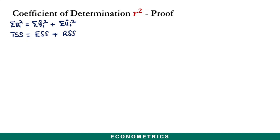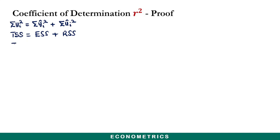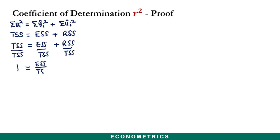The equation TSS = ESS + RSS shows that the total variation in the observed Y values about their mean can be partitioned into two parts: one attributed to the regression line, and the other attributed to the random error term, because not all actual Y observations lie on the fitted regression line. We divide each term by the Total Sum of Squares, and on the left-hand side both terms in the fraction are the same, so we get: 1 = ESS/TSS + RSS/TSS.